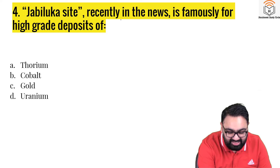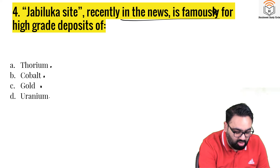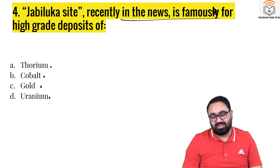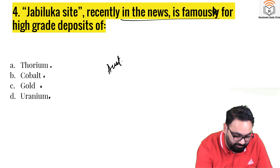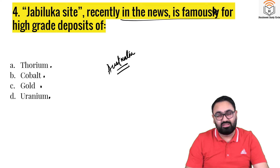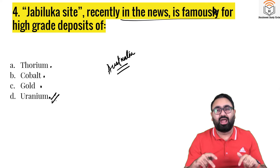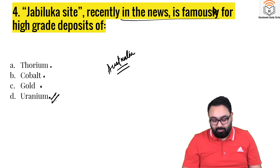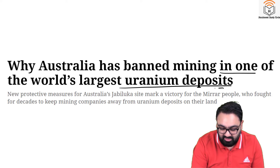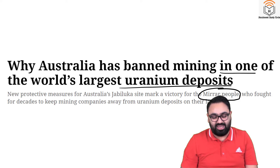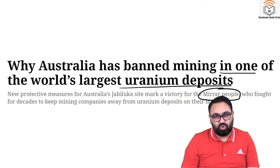Question number four. The Jabiluka site, recently in the news, is famous for high-grade deposits of what — thorium, cobalt, gold, or uranium? This site is in Australia. Think about what mineral resources Australia has. The answer is uranium. Australia has said it will not be mining uranium from this site despite it having a lot of high-grade uranium, because of the indigenous population in that area. Australia has banned mining in one of the world's largest uranium deposits because of the Mirar people, who are indigenous people living there for decades and do not want their land used for uranium mining.